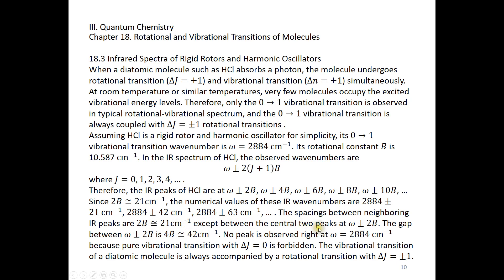So there's a gap between these two. The gap is 4B, 42 cm⁻¹. This is because no peak is observed right at this pure vibrational transition. Pure vibrational transition means delta J equals zero, and delta J equals zero is forbidden. The selection rule of rotational transition is delta J equals plus or minus 1.